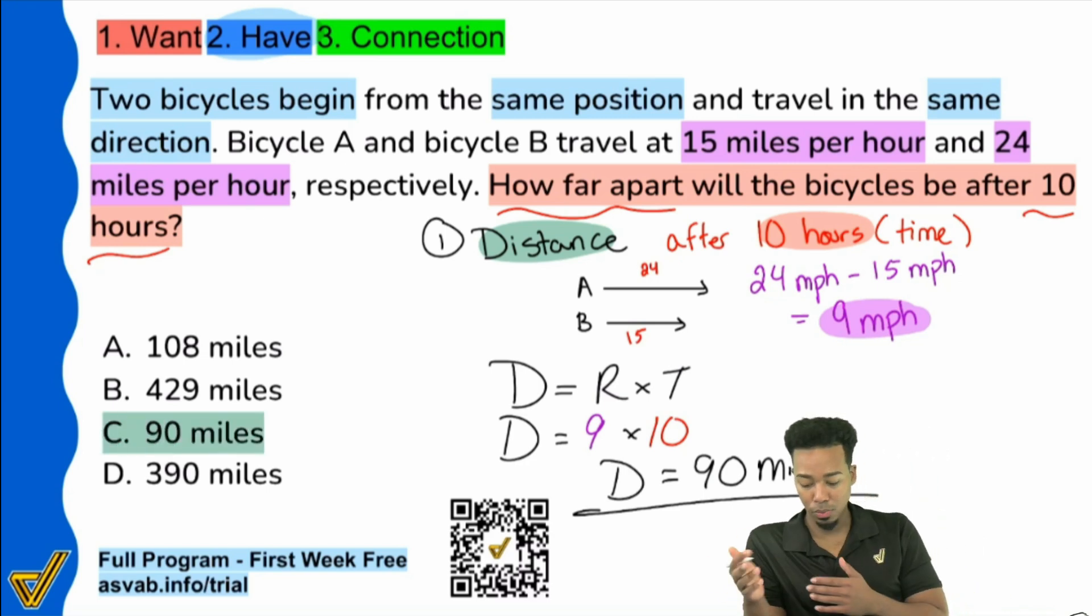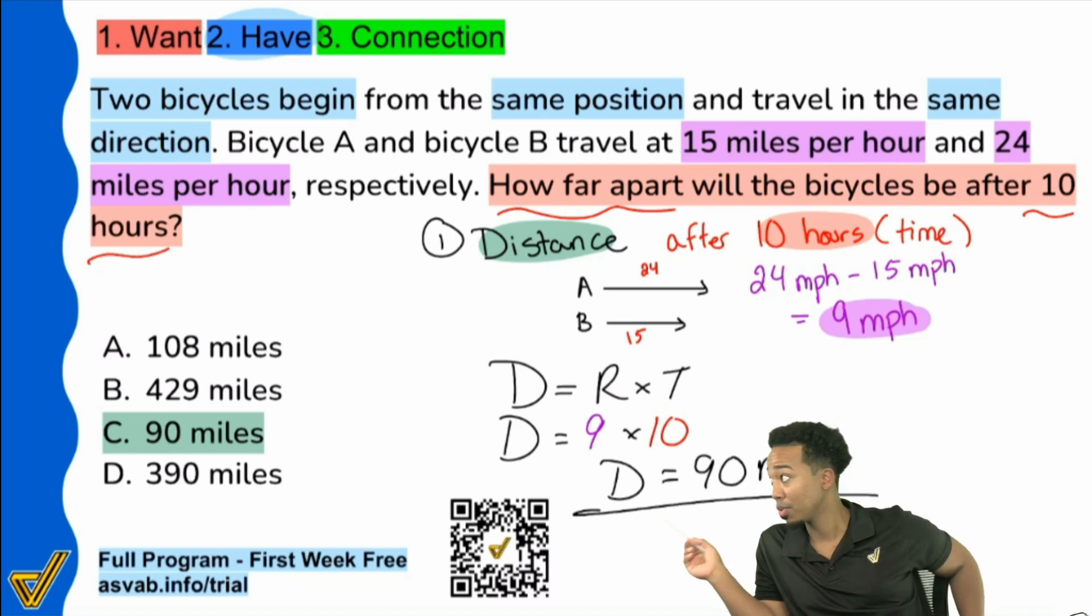If you would have accidentally added these rates, I believe that you would have gotten 390 miles. You would have gotten D if you would have added those rates accidentally. So with that said, my party people, there you have it. You're all set.